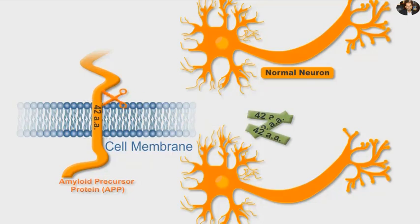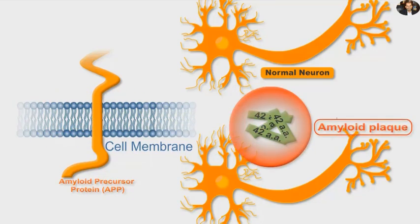These fragments accumulate to form hard, sticky, and soluble clumps called amyloid plaques. These plaques trigger disruption and destruction of the brain tissue of Alzheimer disease patients.